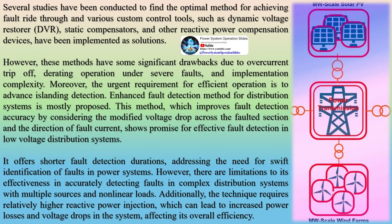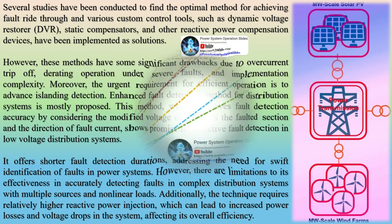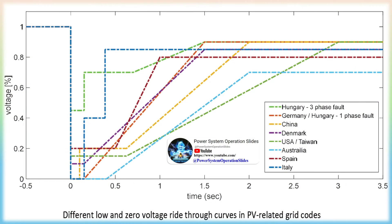During a fault, changes will occur to the system's voltage, current, and frequency, which can lead to the disconnection of some generation units from the grid, reducing reliability. Therefore, Transmission System Operators (TSOs), in the presence of high integration of renewable energy sources, require generation units to have LVRT capabilities or even ZVRT capabilities. In some cases, TSOs will require HVRT capability as well.